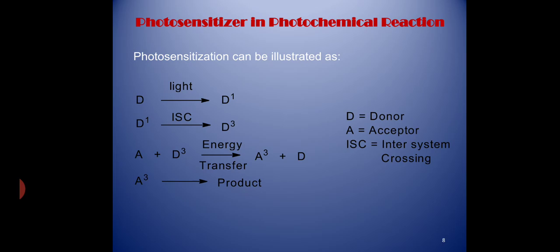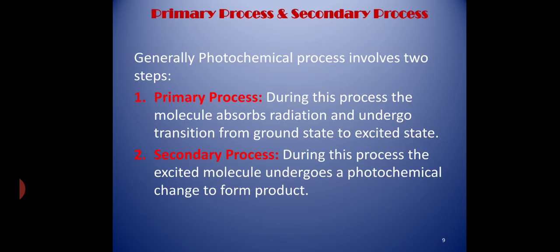So now I think you understand how an acceptor molecule which did not have a chromophore and was unable to absorb light can also undergo a photochemical reaction with the help of a photosensitizer. A photochemical reaction involves two steps: one is the primary process and the other is the secondary process. In the primary process, the molecule absorbs radiation and undergoes transition from ground state to excited state. In the secondary process, the excited molecule undergoes a photochemical change to form a product.